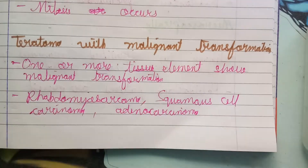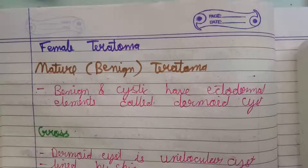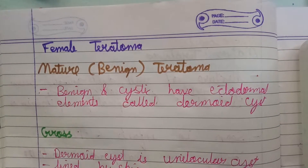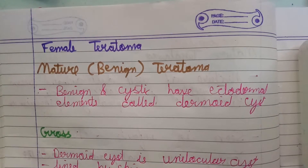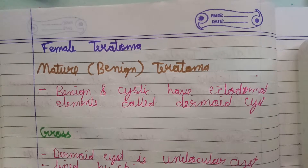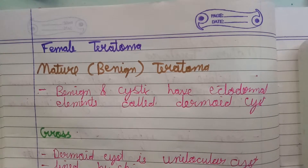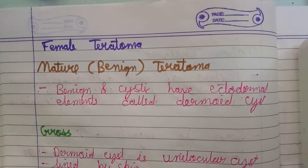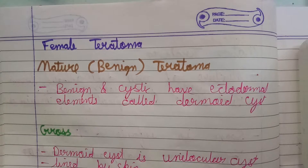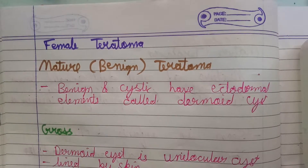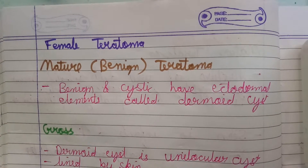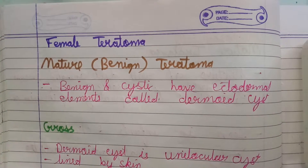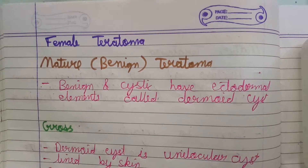Now let's move on to female teratoma. The definition remains the same. It is also considered in three parts: mature, immature, and monodermal teratoma.